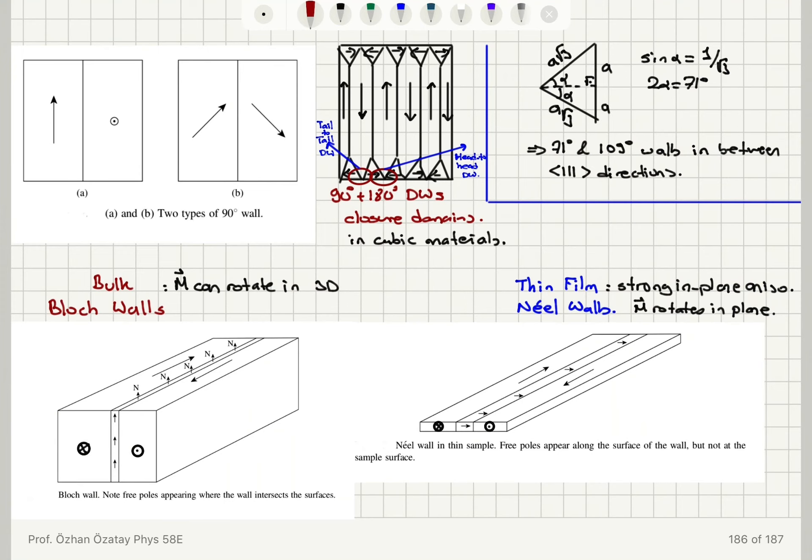Together, 90 degree and 180 degree domain walls form closure domains and head-to-head, tail-to-tail domain wall configurations. In the bulk of magnetic materials, we have block type walls where magnetization can rotate out of plane. In the thin film case, we have strong in-plane anisotropy and Néel walls, where the magnetization has to rotate in plane.